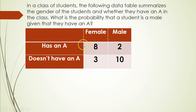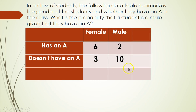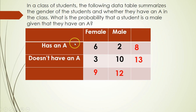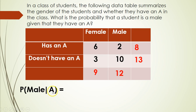What we need to do is find the totals by adding another column and row. Adding 6 and 2 gives 8. Adding 3 and 10 gives 13. Six plus 3 is 9, and 2 plus 10 is 12. Now, the question asks for P(male | has an A). 'Given that they have an A' refers to the total of students with A's, which is 8 — that's our denominator. Of those 8, how many were male? Two. So the answer is 2 over 8, which simplifies to 1/4, or 0.25.